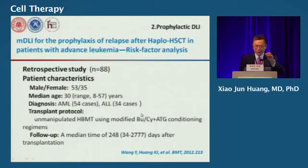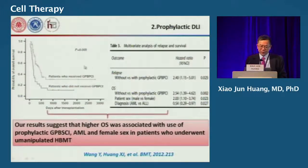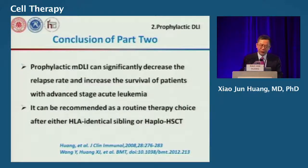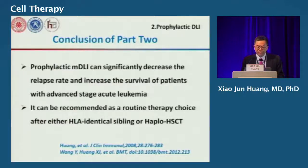We also applied multiple modified donor lymphocyte infusions to advanced-stage patients. In haploidentical transplantation, we found similar results: prophylactic donor lymphocyte infusion resulted in lower relapse and higher disease-free survival. We conclude that prophylactic modified donor lymphocyte infusion can significantly decrease the relapse rate and increase the survival of patients with advanced-stage acute leukemia, and can be recommended as a routine therapy choice after either HLA-identical or haploidentical hematopoietic stem cell transplantation.